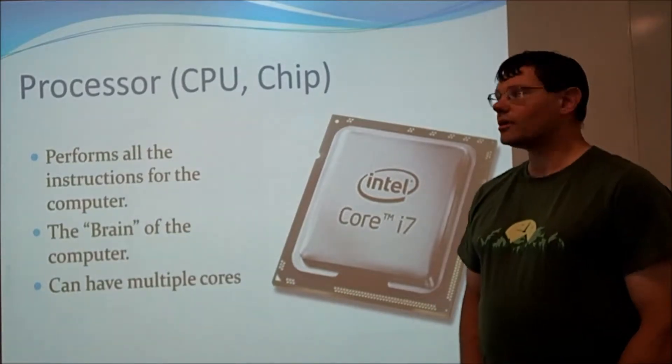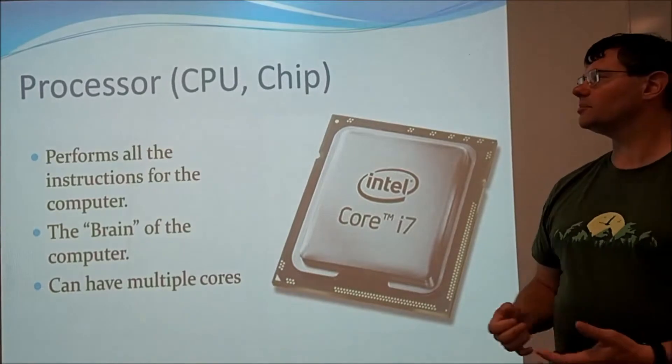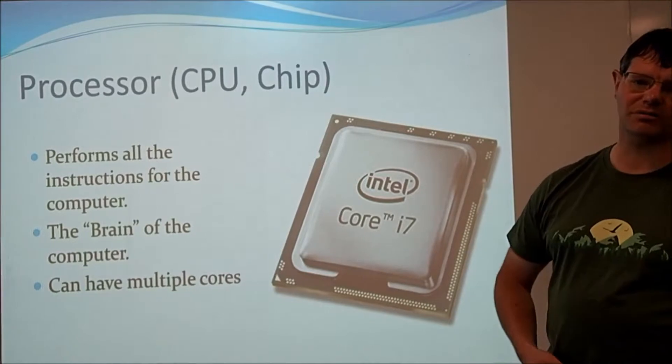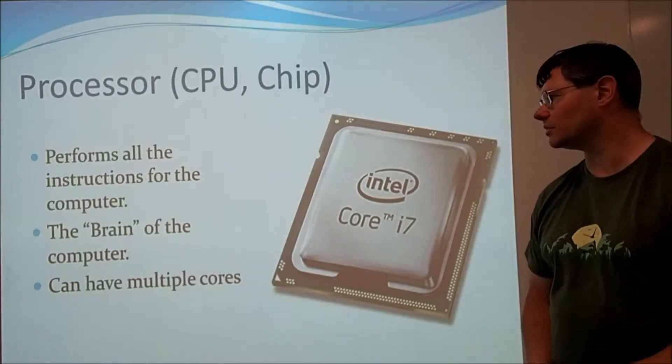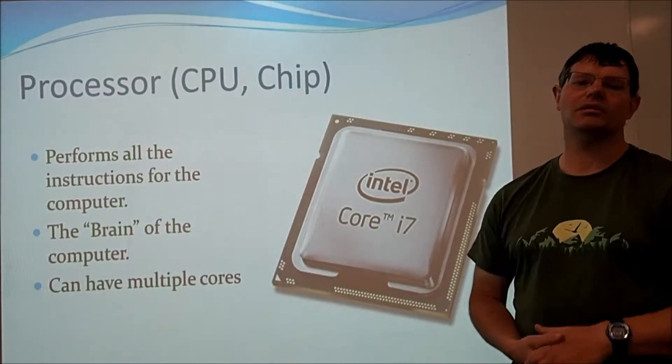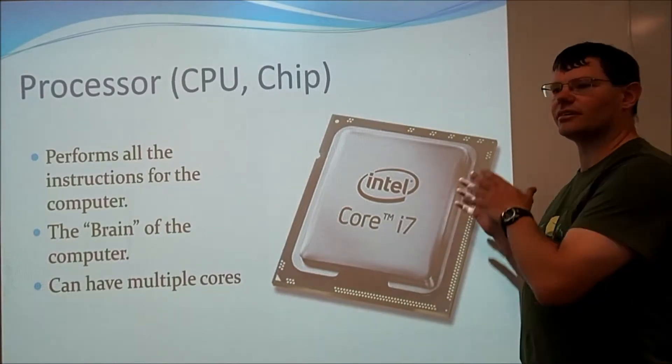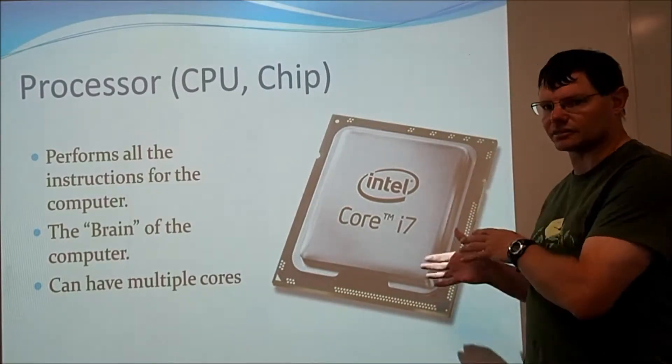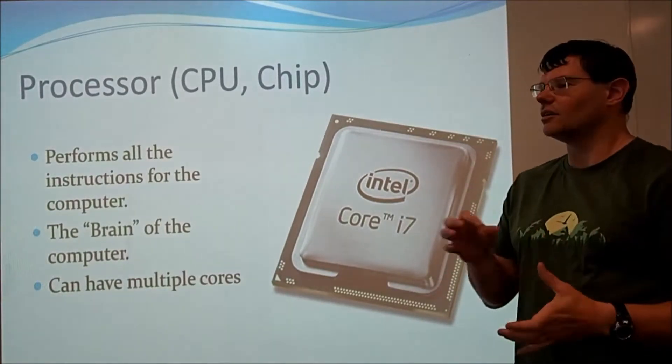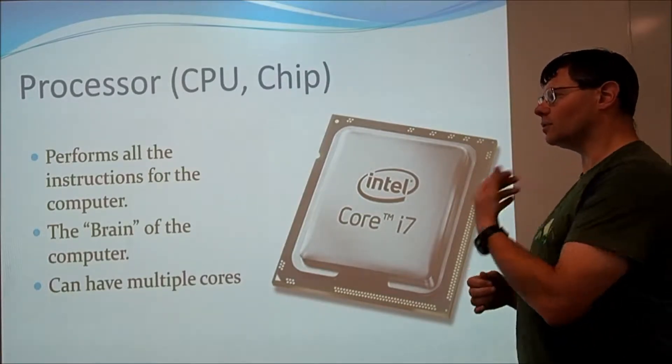First of all, the processor. Sometimes called the CPU, sometimes called the chip. CPU stands for Central Processing Unit, so that's the official term, but most people shorten it to processor or CPU or chip. So, what the chip does, it runs everything on the computer. Whenever you ask the computer to do something, it has a program, it has a set of instructions that it needs to do. The processor is the bit that does all of the instructions.